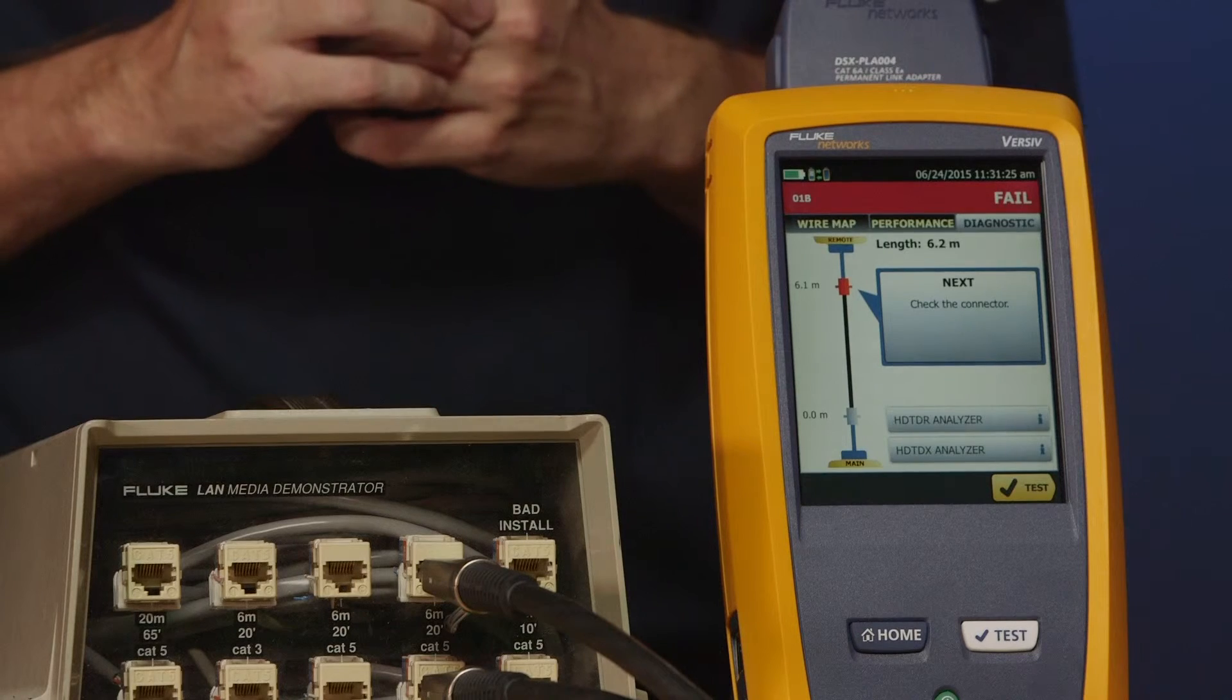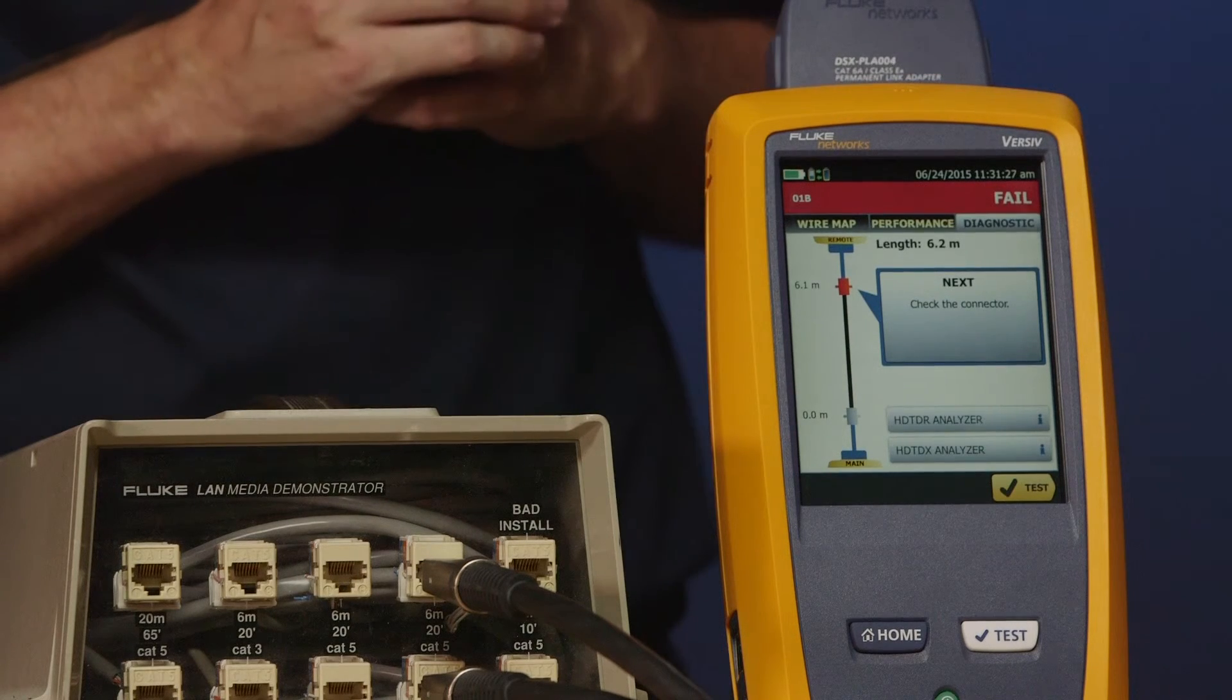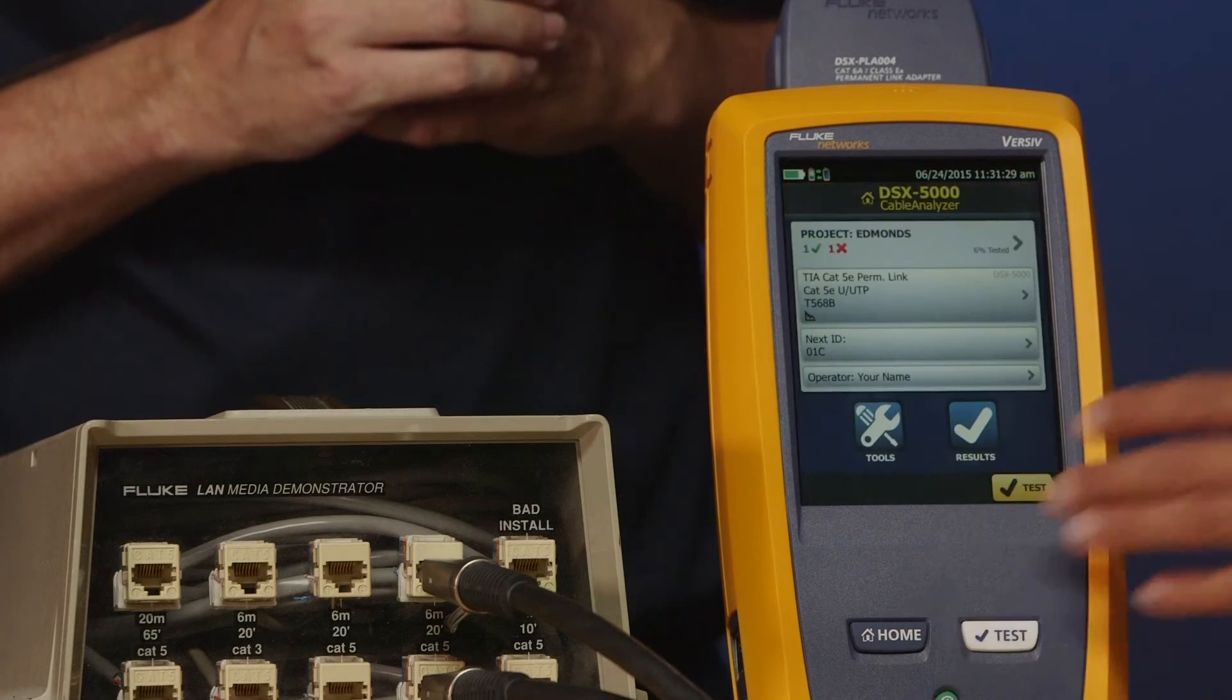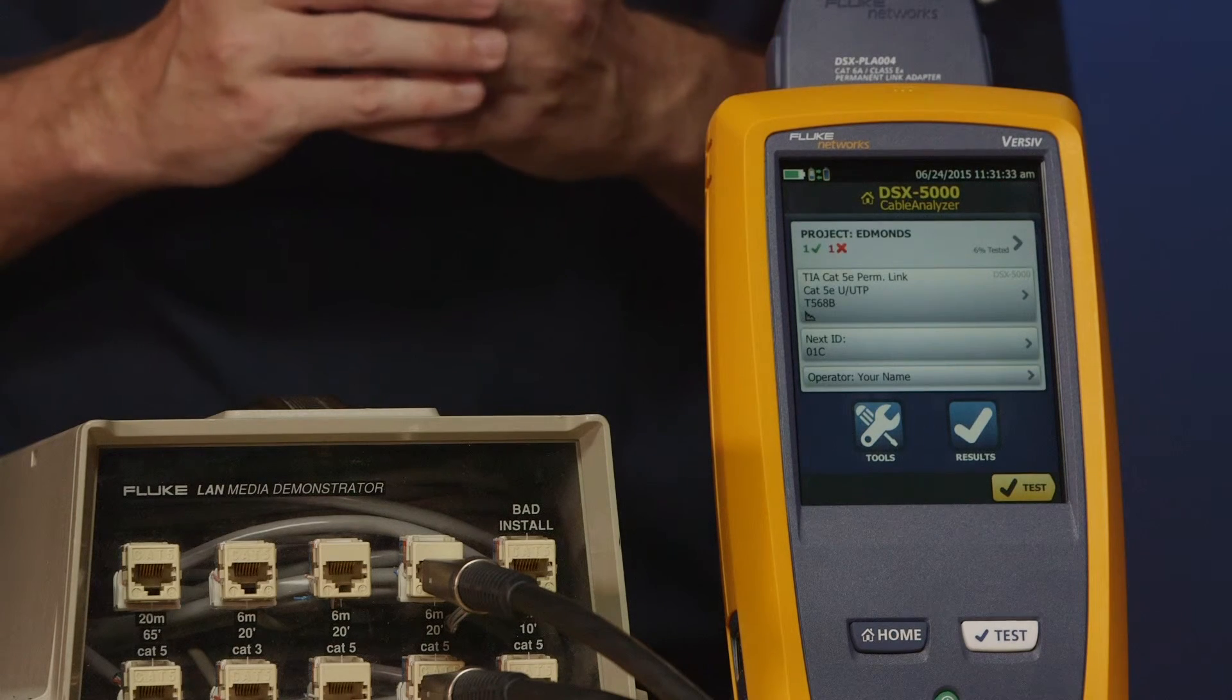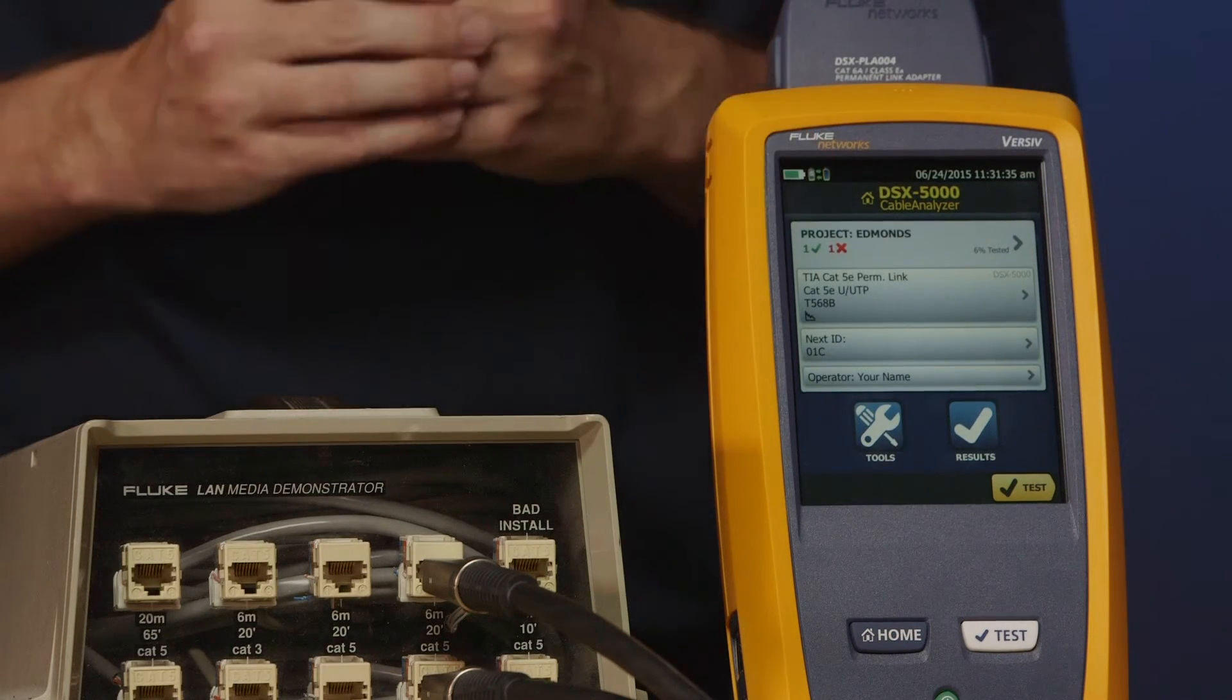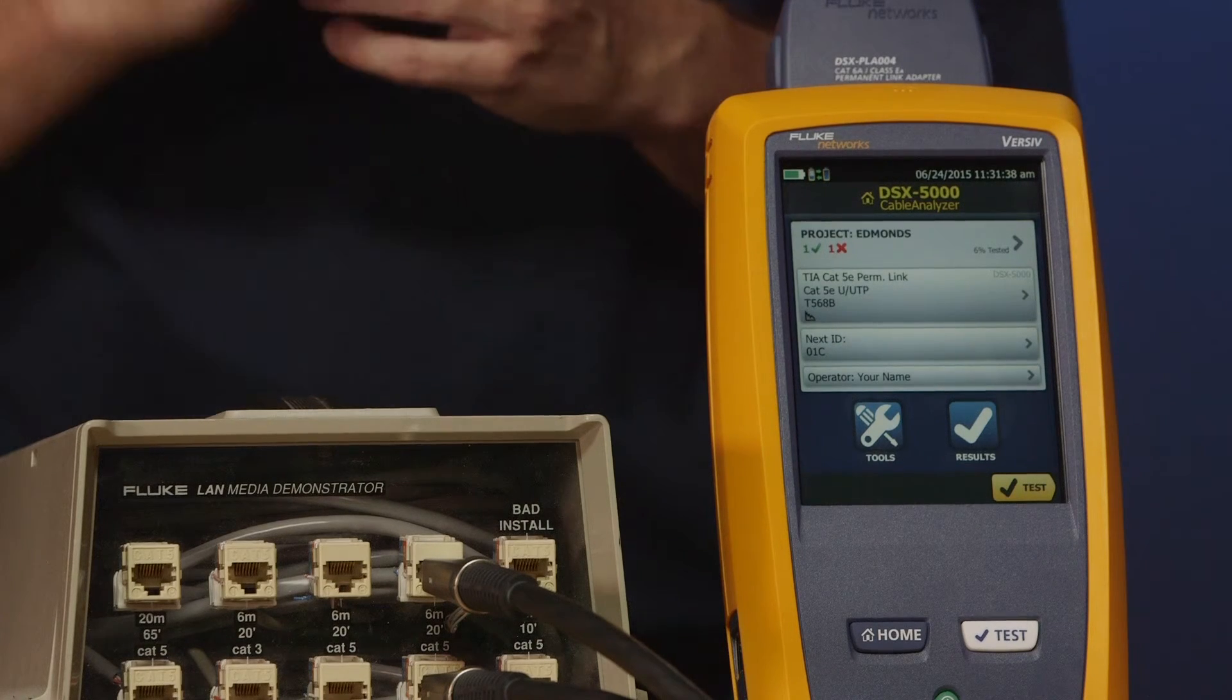One more thing that's kind of cute about this tester. Go ahead and press the home key for me, Amanda. At any one stage, you can go to the home screen and see how you're progressing with the job. So on here, you can actually see that we have one green tick and one X.